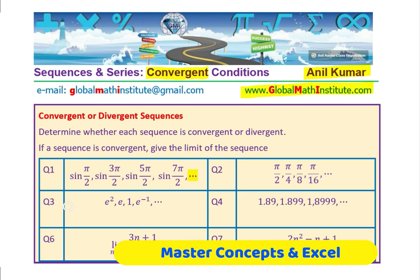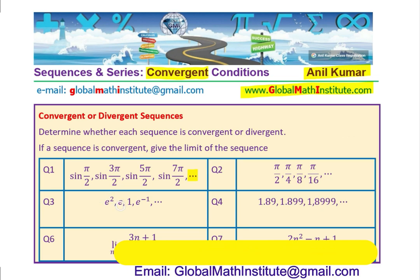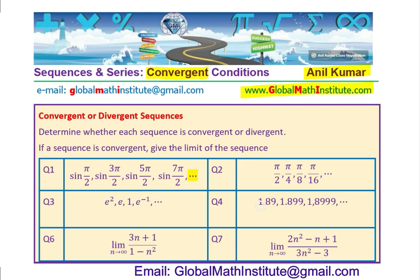Question number 3: e², e¹, e to the power minus 1, and so on. And then decimals: 1.89, 1.899, 1.8999, and so on. We have also taken two examples where the sequence is written in terms of a limit.